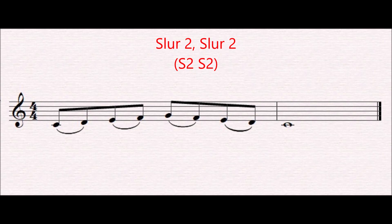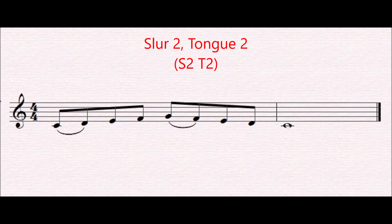This next chunk covers all the different ways we can slur two notes of the four. The most obvious: slur every two notes — 'slur two, slur two.' We're tonguing on every beat, creating a new rhythmic feel. We can also do 'slur two, tongue two' — slur the first two notes and tongue the second two. Or flip it: 'tongue two, slur two.'